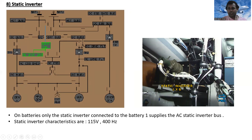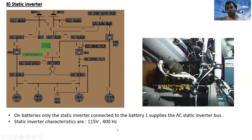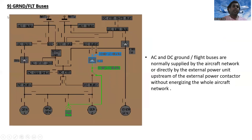For the static inverter: when on batteries only, the static inverter connected to battery one supplies the AC static inverter bus. Static inverter characteristics are 115 volts, 400 hertz.